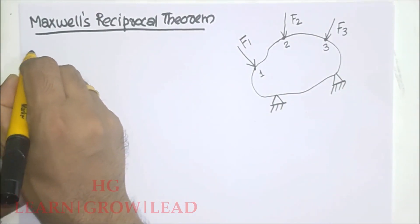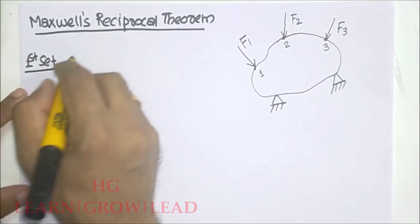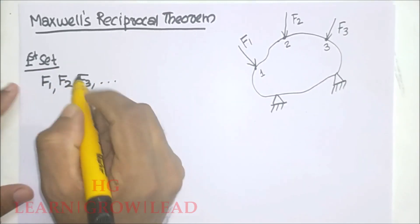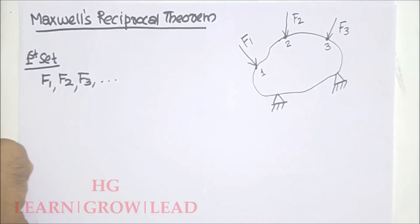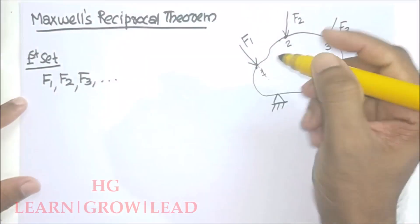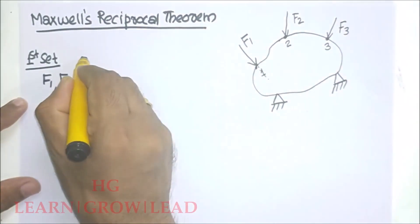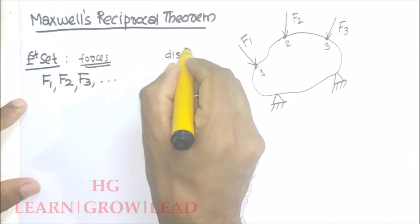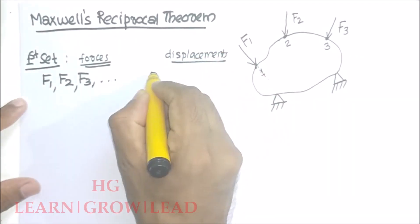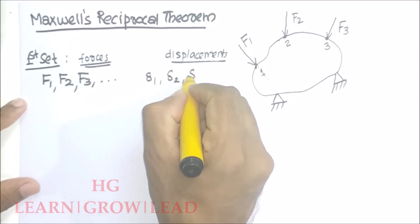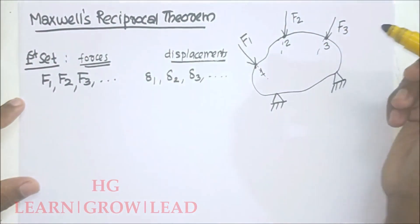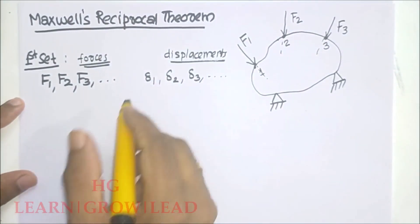Now, I am going to consider the first set of forces: F1, F2, F3, etc. If we are using a deformable body, displacements will be produced in the direction of F1. The first set of forces will produce corresponding displacements delta1, delta2, delta3, etc. Using influence coefficients, displacement can be written as: delta1 = A11·F1 + A12·F2 + A13·F3 + etc.